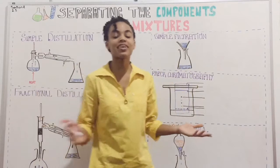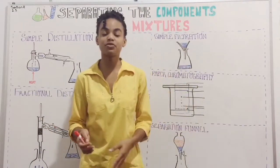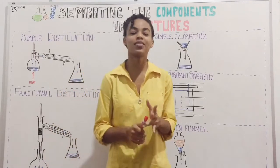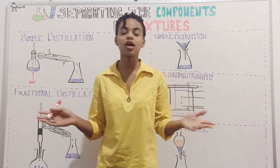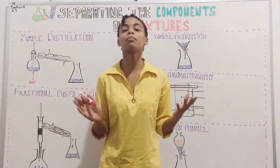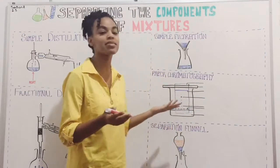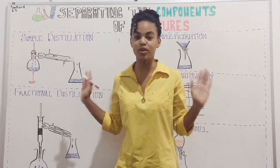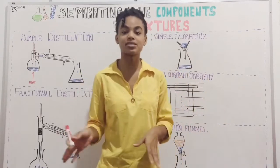So what's the purpose of having these separation methods in the first place? In the previous video we looked at suspensions, colloids, solutions, the different kinds of mixtures. But in the event that you want to separate the component parts of these mixtures, you have to have a method. So depending on the kind of mixture that you have, you'll choose one of these methods to separate the solute from the solvent.